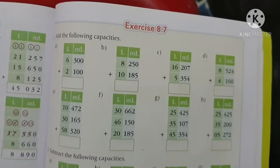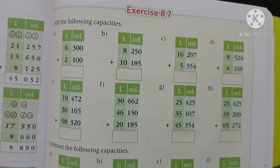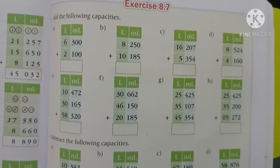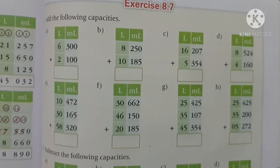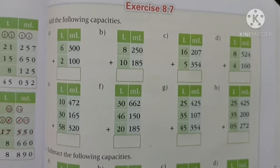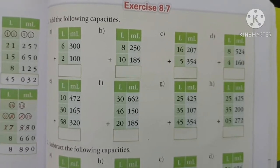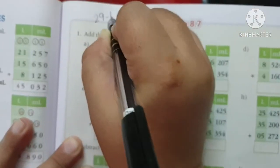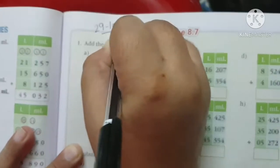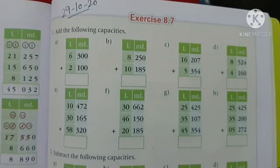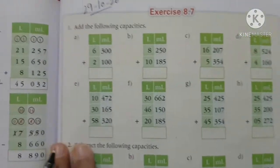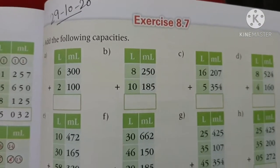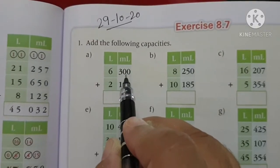Now students, open your maths notebook, page number 141, exercise 8.7. Write here date: 29-10-20. First question is: add the following capacities.